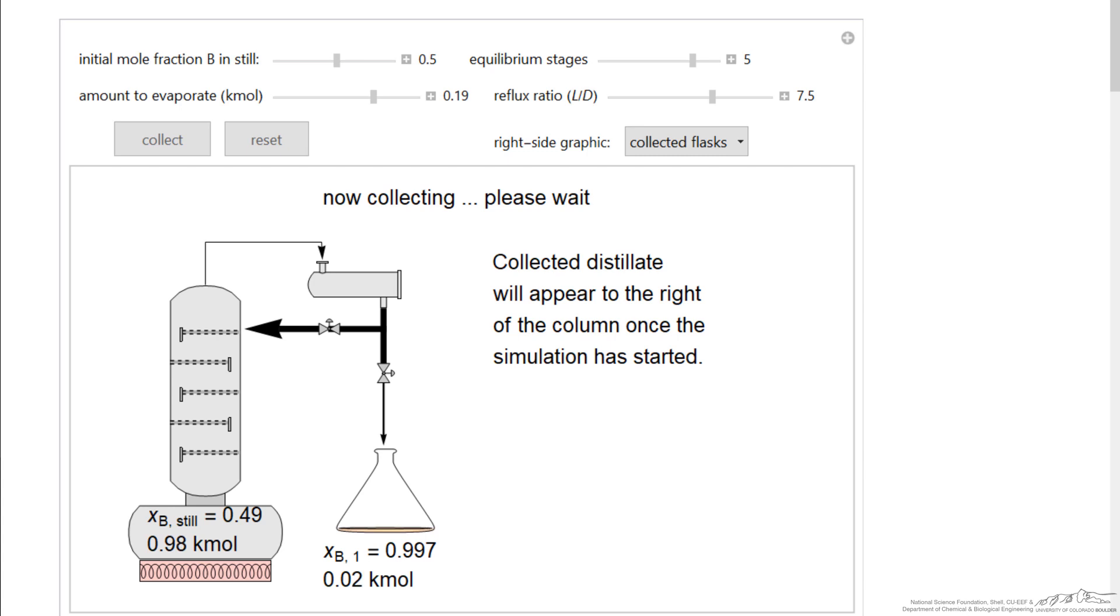When we collect, notice now the mole fraction is 0.997 of the initial material coming over. So with more stages and high reflux, we can get very high purity component B.